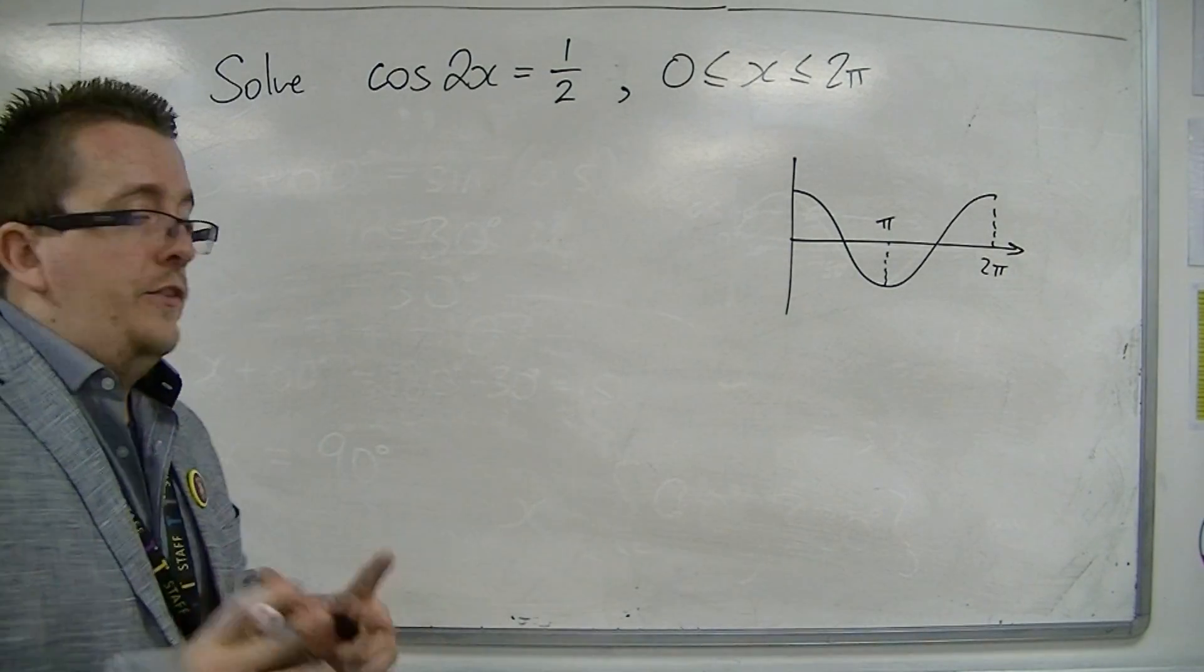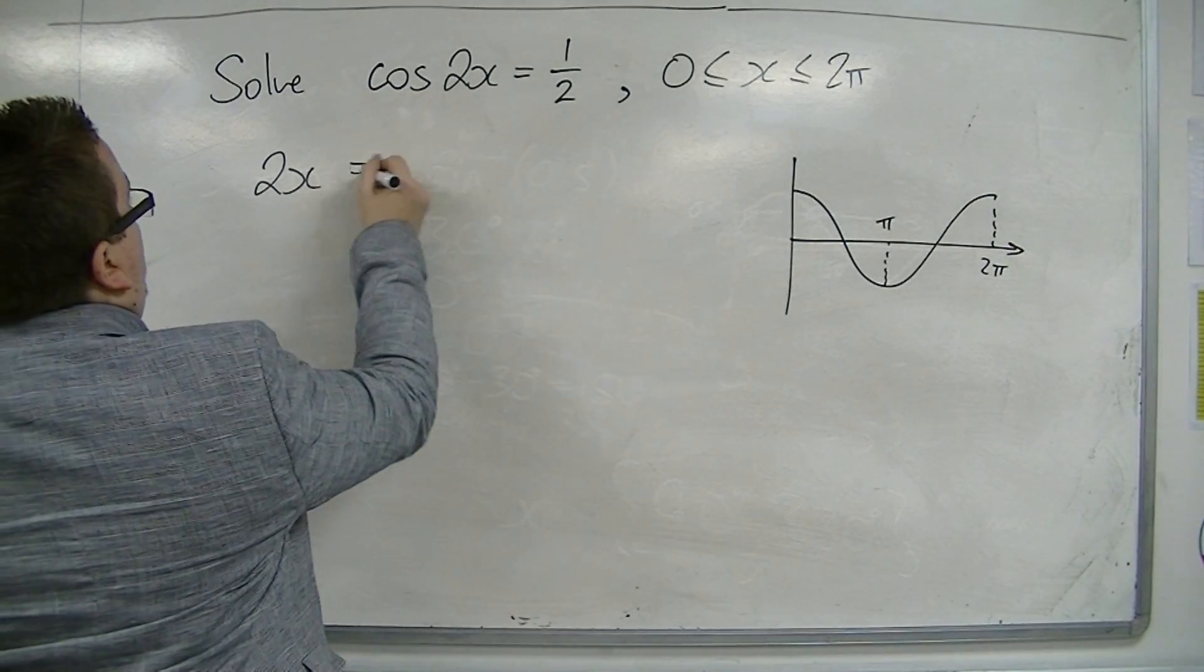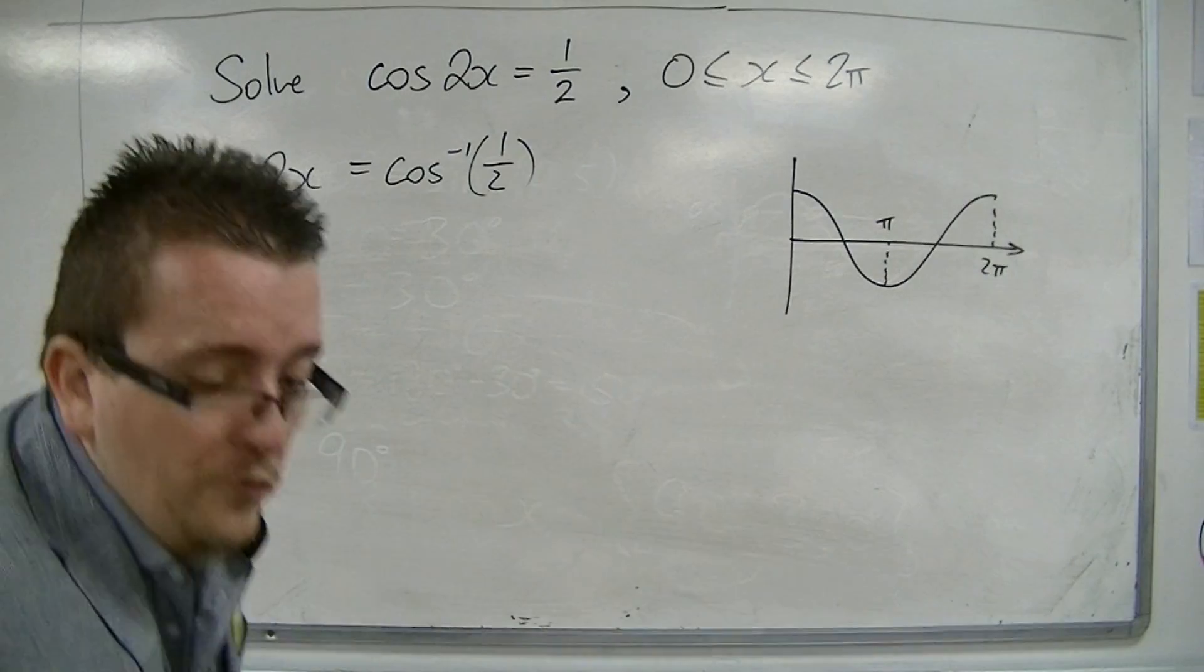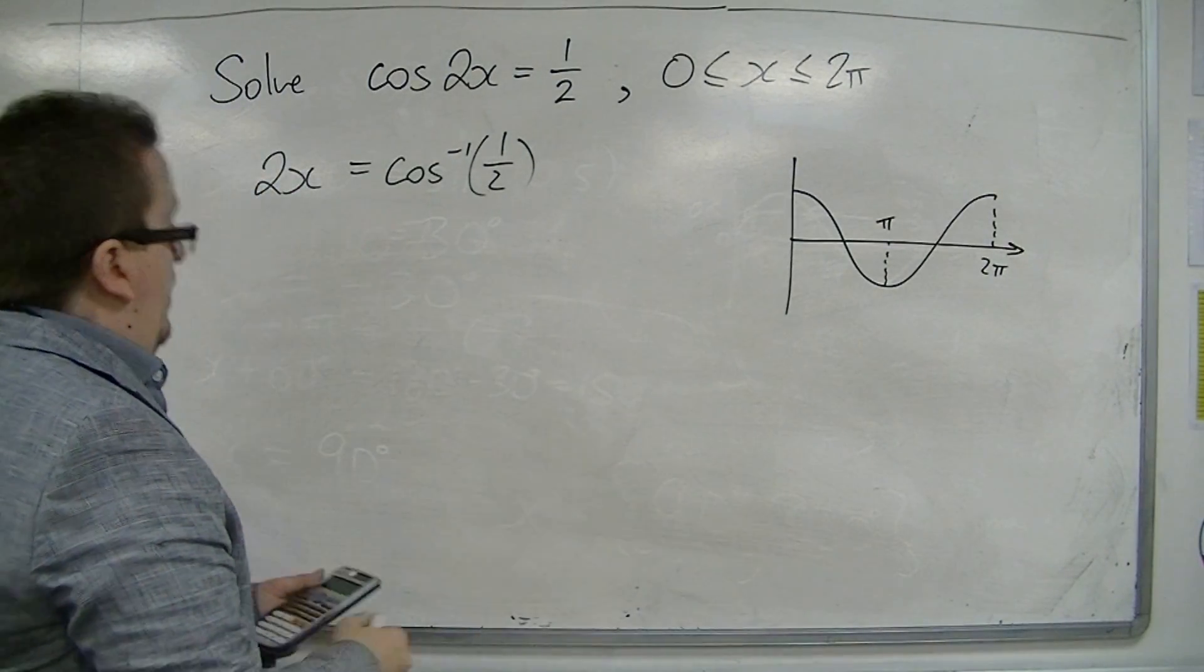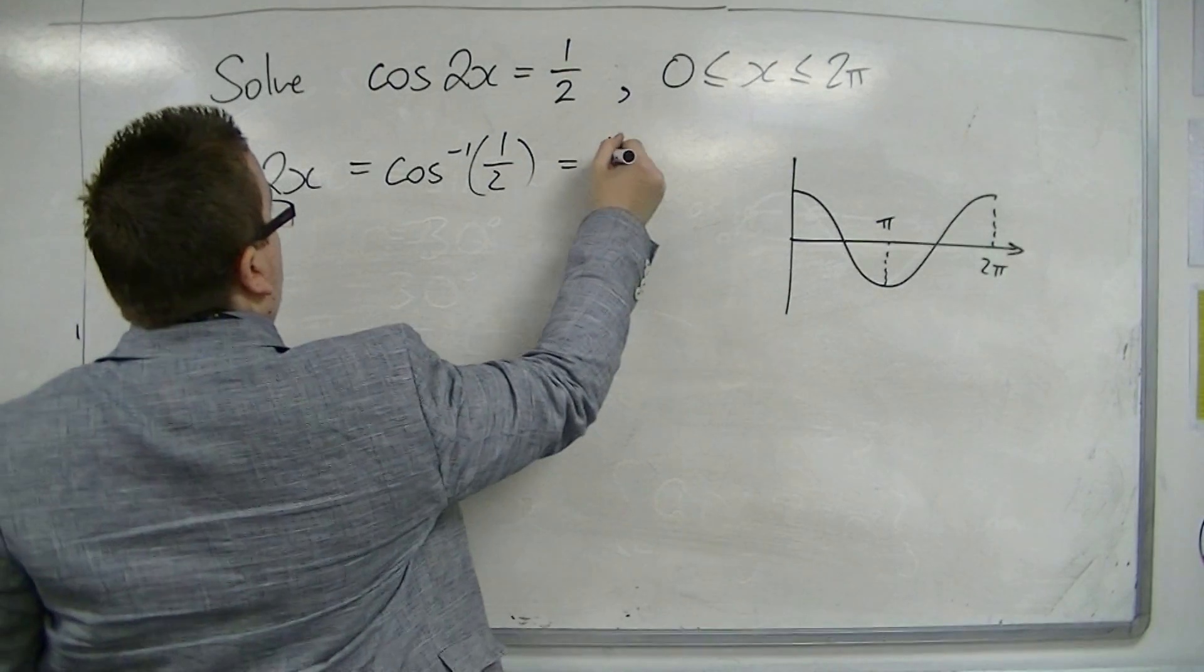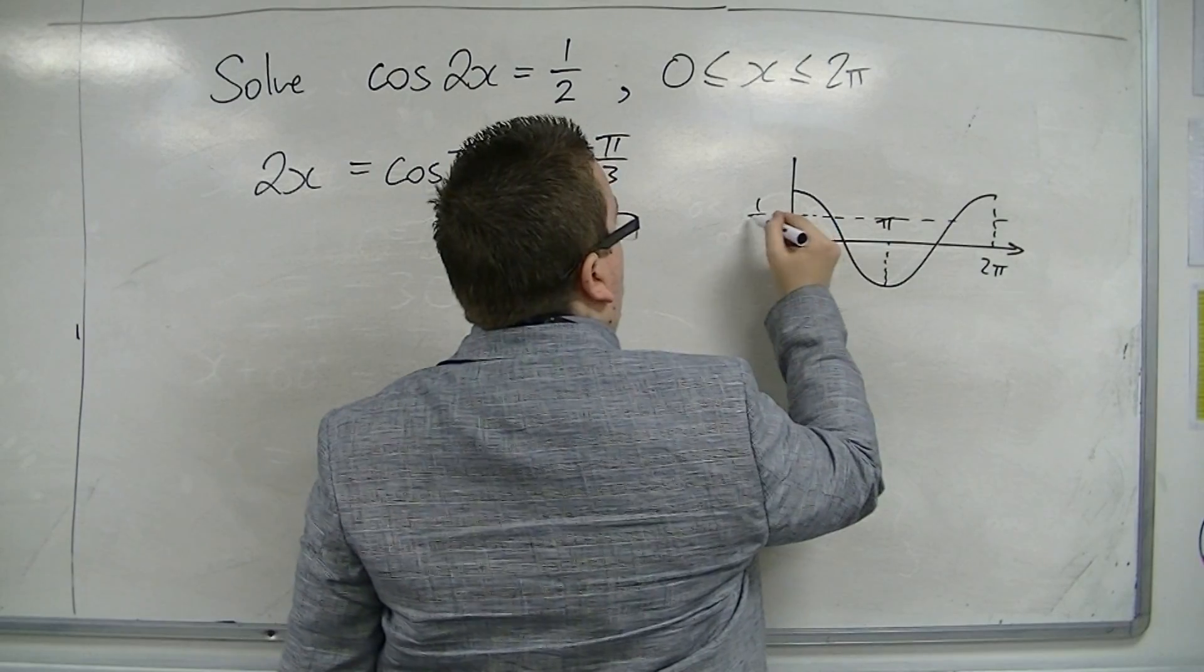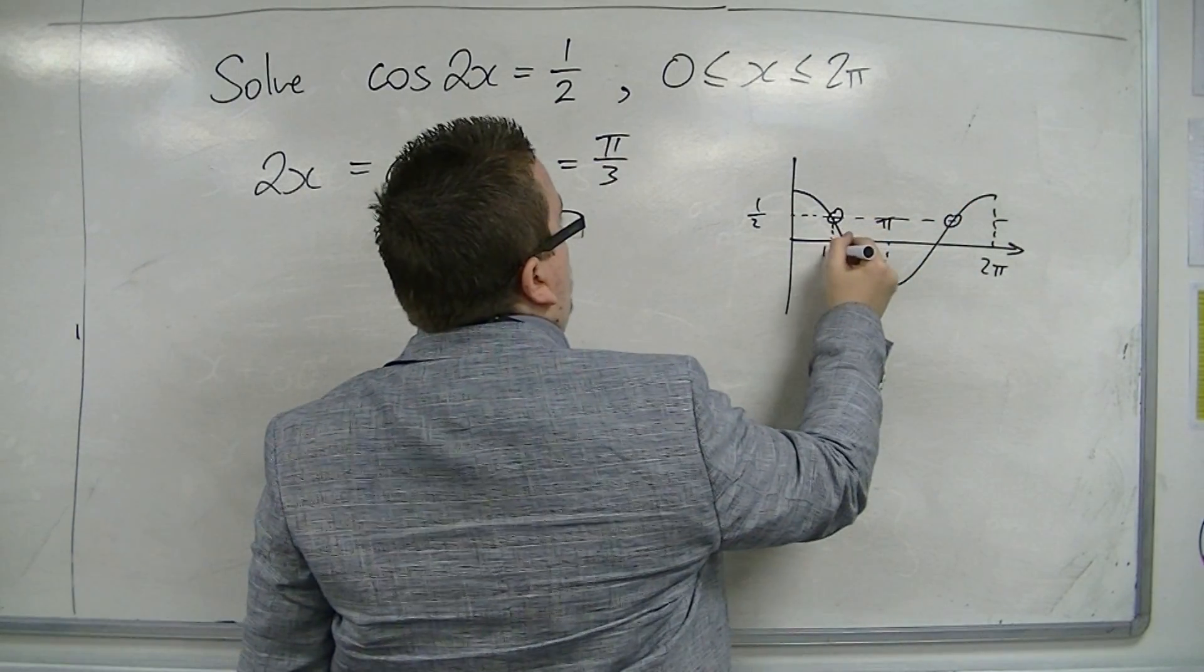So I inverse cos both sides. The 2x maintains as it is. So we do inverse cos of 1 half, which is pi over 3. So 1 half on my curve is hitting there and there. So that's my pi over 3.